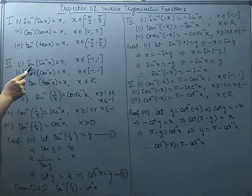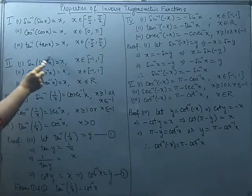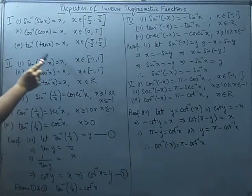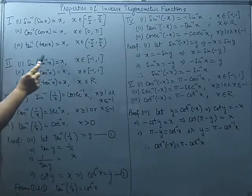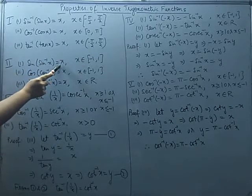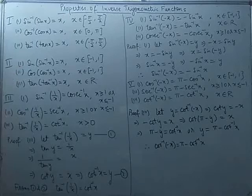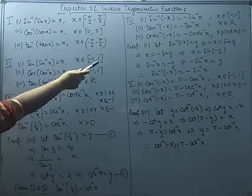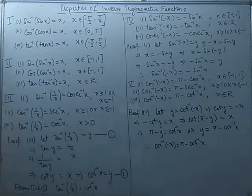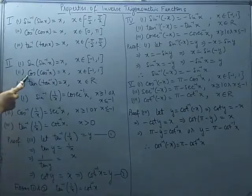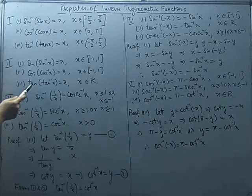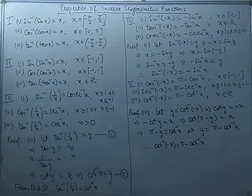In the same manner, if it is sin(sin⁻¹x), this means the inner expression denotes a certain angle, and sin of that angle gives a real number. We know the value of sin of a certain angle always lies between -1 and 1, so x will belong to the closed interval [-1, 1]. Similarly, cos(cos⁻¹x) = x and tan(tan⁻¹x) = x, and the same holds for the remaining three functions.